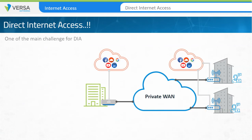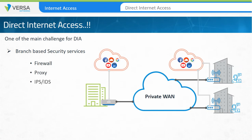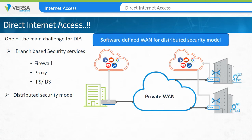One of the main challenges with DIA is the need for branch-based security services. Because the security services are no longer centralized, the same types of services must be implemented on each site, which may include firewall, proxy server, and IPS-IDS services. This creates a distributed security deployment instead of a centralized security deployment. This challenge is met by software-defined WAN solutions, where the security services are built into each branch device and are managed centrally through software.